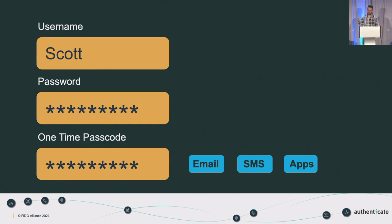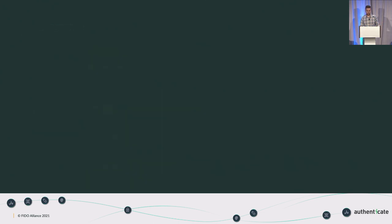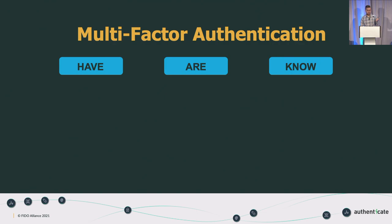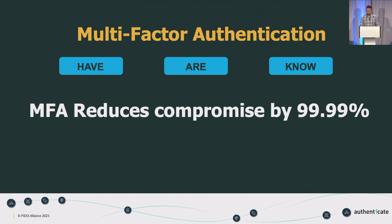Problem solved, right? We have multi-factor authentication. The data doesn't lie: MFA reduces compromise by 99.99%. It's very difficult to compromise an account that has MFA implemented. But that's not the whole story. When we implement MFA, there are some trade-offs. The first is it's slow — you've introduced another step. You've got to type your 13-character password, then request a code by SMS, wait for it to arrive, and enter a nine-digit code — it can get a little clunky.